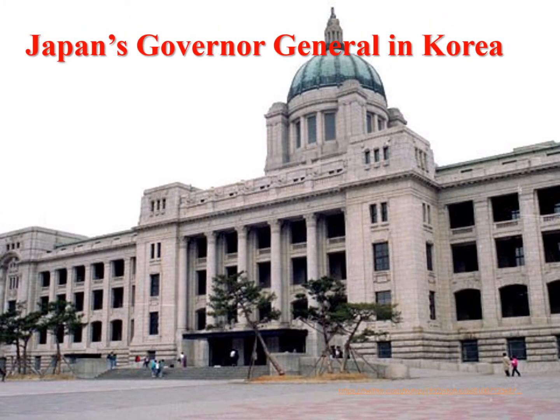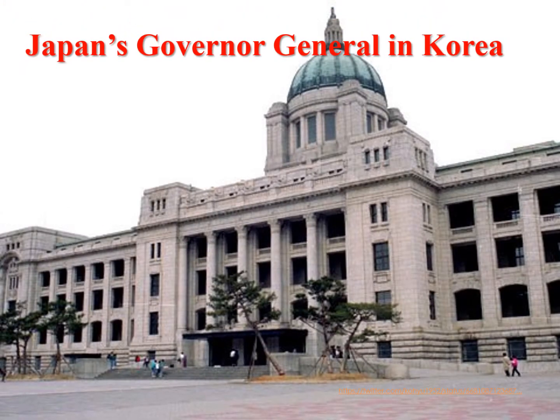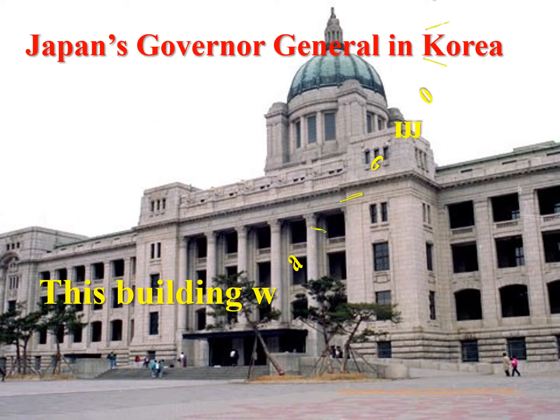Japan's Governor General building in Korea — this building was demolished as the symbol of Japanese rule.